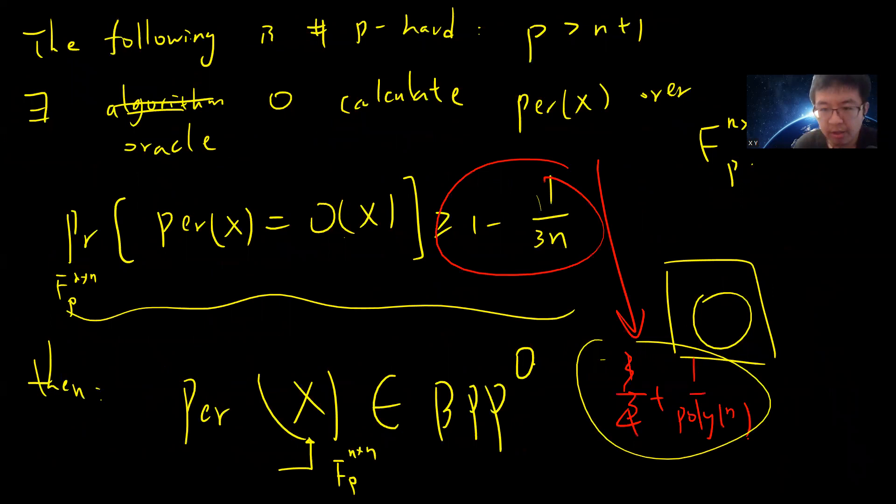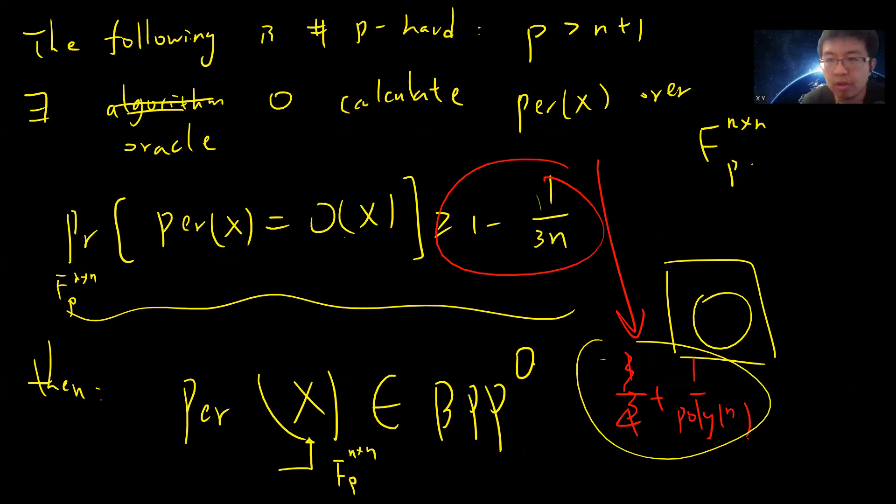If you haven't seen the previous video, you can check it out. In this video I will use a more sophisticated tool to show why the probability threshold can go up to 3 divided by 4 plus 1 over poly(n).